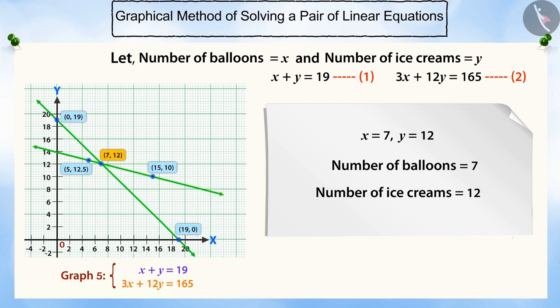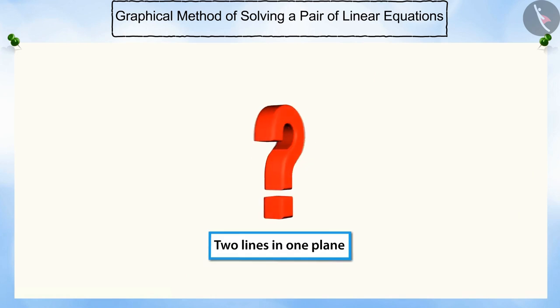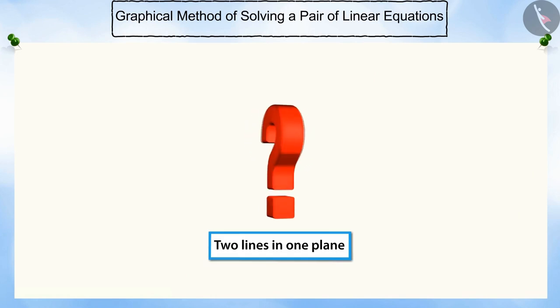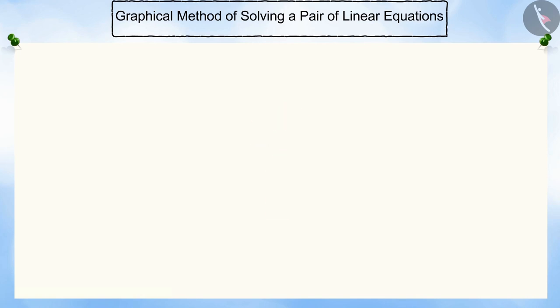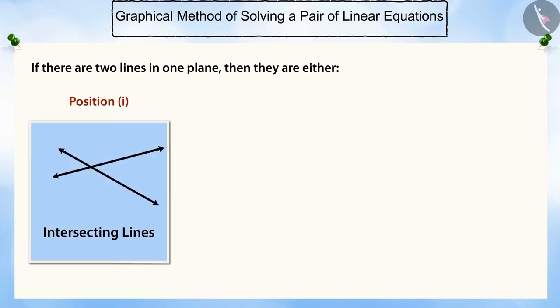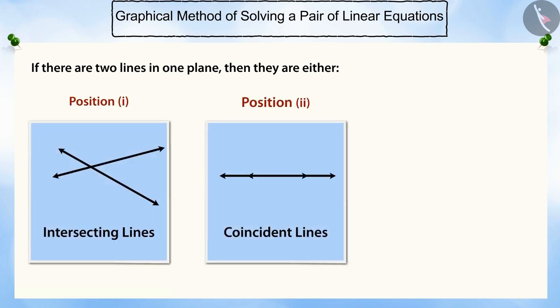In this example, you saw two straight lines intersecting each other at one point. Can you think of two straight lines in one plane in any other position? We know that if there are two lines in one plane, then those lines are either intersecting, coincident, or parallel.